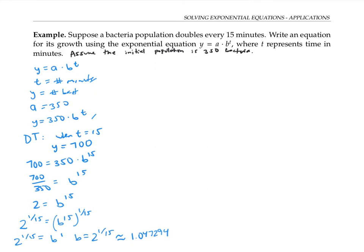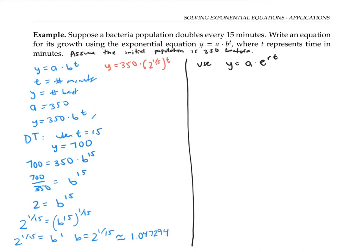I'll rewrite my equation as y = 350 times 2 to the 1/15, to the t. Now I'd like to work this problem one more time, and this time I'm going to use the form y = a times e to the rt. This is called a continuous growth model. It looks different, but it's actually an equivalent form to the growth model we just used.